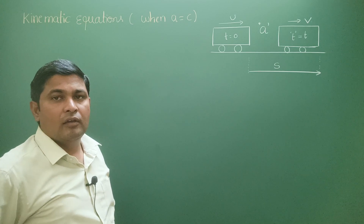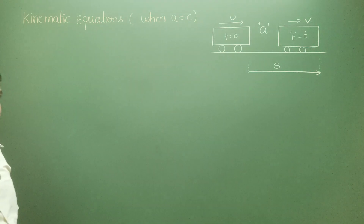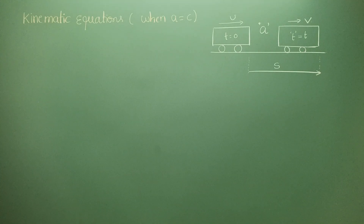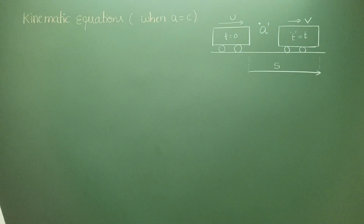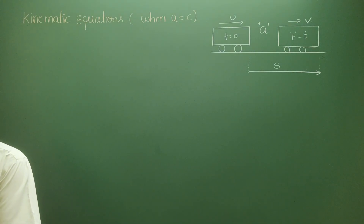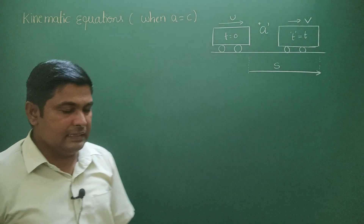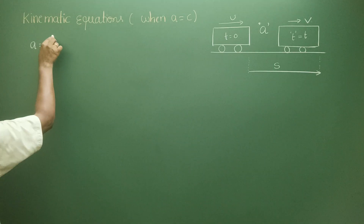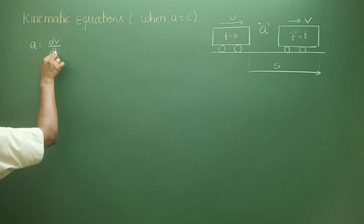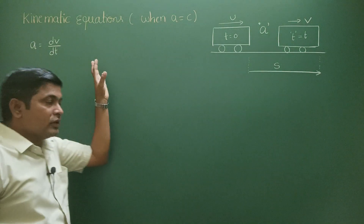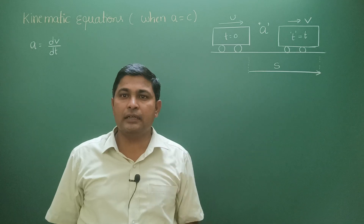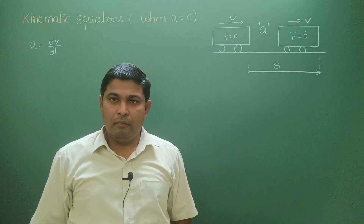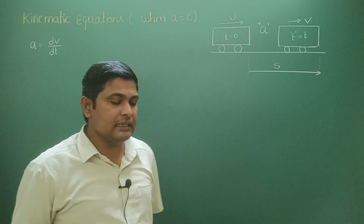This is the situation from which we are going to derive the kinematic equations. To understand how these derivations work, we need to remember the basic definitions. What is acceleration? Acceleration equals the rate of change of velocity: dv by dt. To get the equations, we have two methods. The first method is by using calculus: acceleration equals dv by dt.